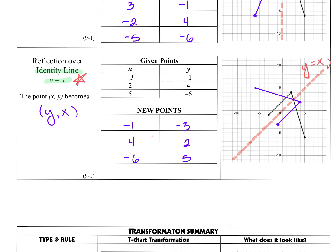This picture looks really complicated — this is where following your points in order is really important. Notice this new point negative 1, negative 3: y was negative 1 and it became x, x was negative 3 and it became the y. The 4 goes into the x position, the 2 goes into the y, and they just flip-flop. Plot the point negative 1, negative 3, then plot your next point 4, 2, and immediately connect. Only then do you plot your third point and connect. If you try to plot all three first, you're going to be really confused on how to draw it.